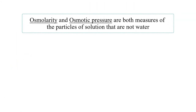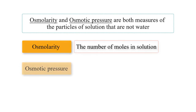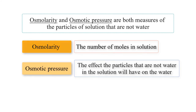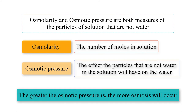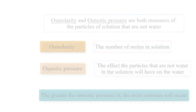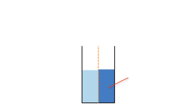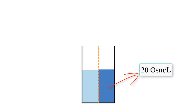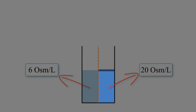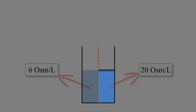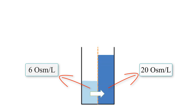It is important to point out that osmolarity and osmotic pressure are both measures of the non-water particles in solution, but they refer to different concepts. Osmolarity refers to the number of moles in solution, and osmotic pressure refers to the effect those non-water particles will have on the water. The greater the osmotic pressure, the more osmosis will occur. For example, a solution at 20 osmoles per liter exerts greater osmotic pressure than one at 6 osmoles per liter, so more water will diffuse into the solution at 20 osmoles per liter.